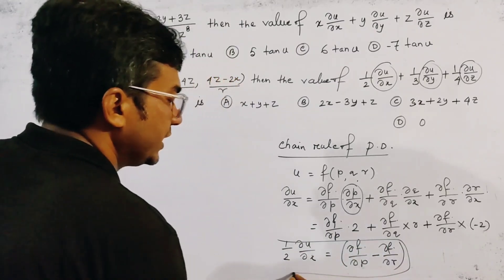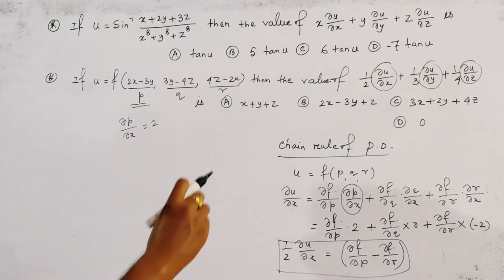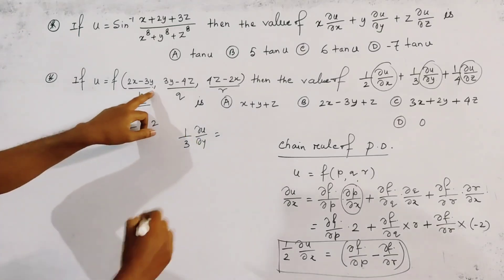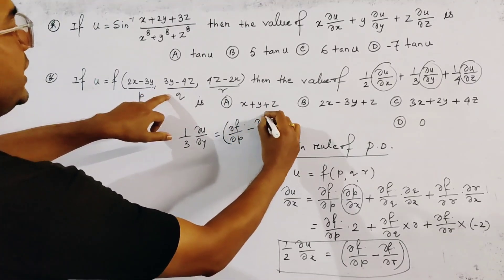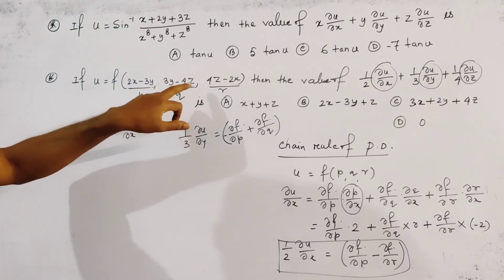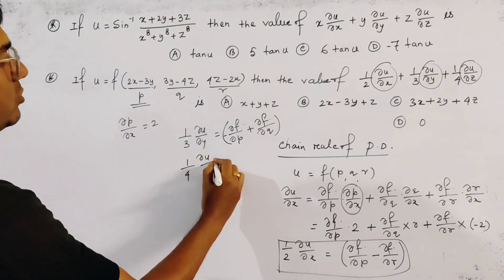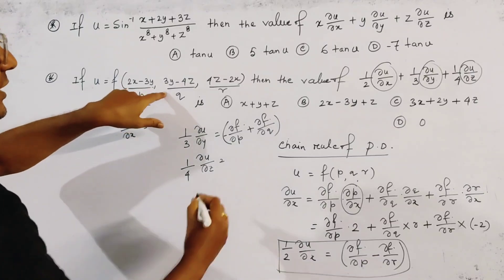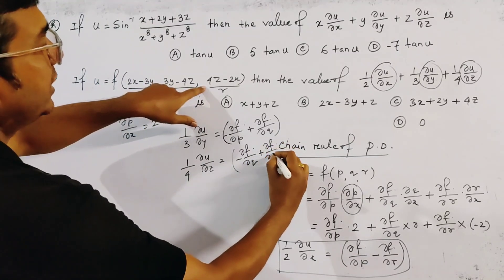We get the first expression of the required result. Similarly, by using the same chain rule, we find that ⅓ ∂u/∂y = (∂f/∂p) minus (∂f/∂q), because the coefficient of y in p is −3 and in q is +3, while r is independent of y. And the third expression, ¼ ∂u/∂z = minus (∂f/∂q) plus (∂f/∂r), from the z-side terms.